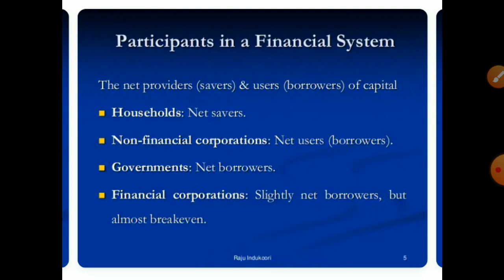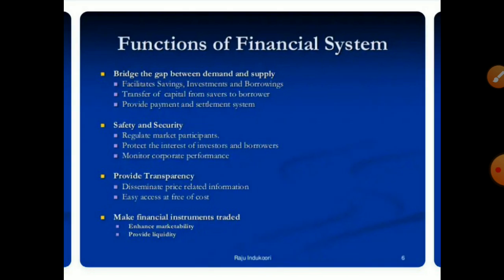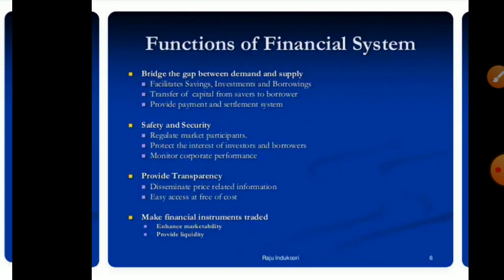The needs providers — savers and users, also called borrowers of capital — include households, non-financial corporations, governments, and financial corporations. The functions of the financial system include bridging the gap between demand and supply, providing safety and security, transparency, and making financial instruments rate-efficient.